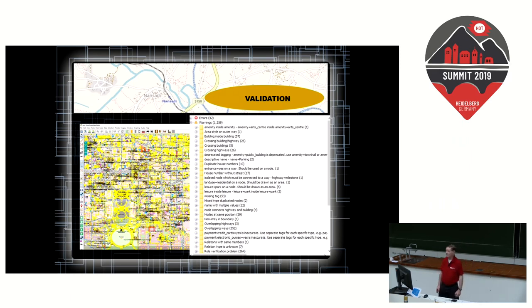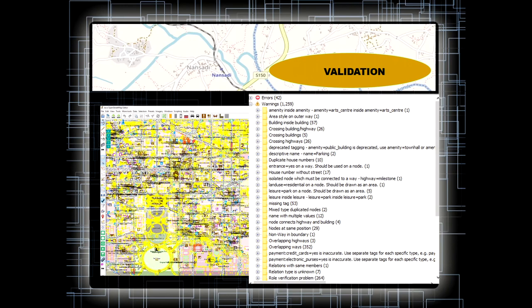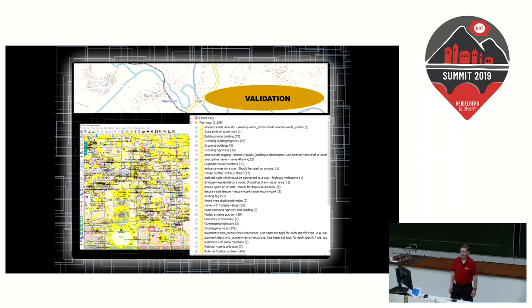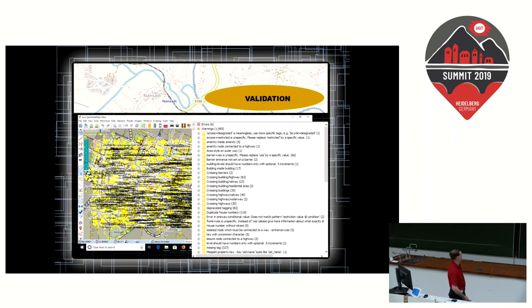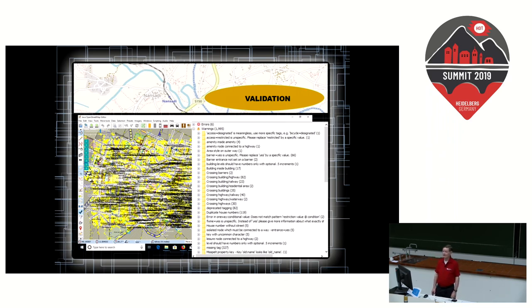We've had a lot of criticism that HOT mapping is not accurate. So I took the center of Washington D.C. — a purely OSM project by OSMers — and found 42 errors and 1,259 warnings. Then I looked at Munich: only 6 errors, but 1,995 warnings. These are the people complaining that HOT mapping is bad. OSM itself is not holding its hands — remember, when someone points a finger at you, there are three fingers pointing straight back.